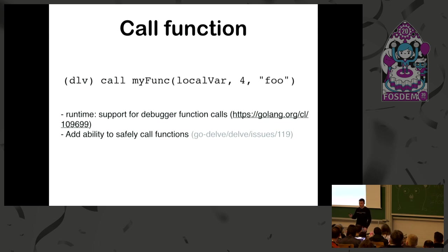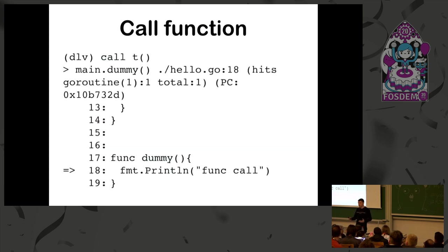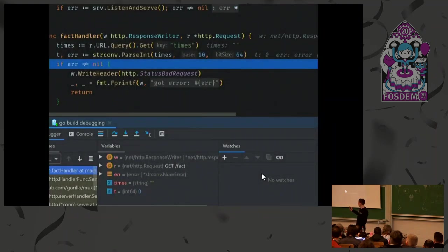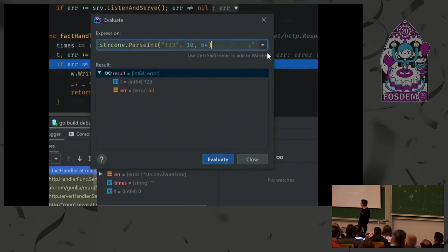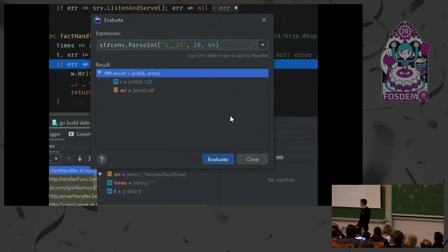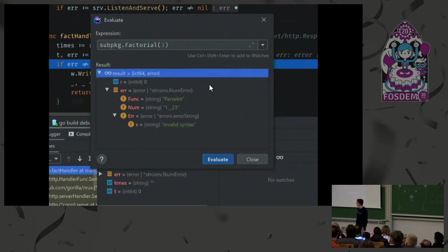You can call a function and debug it, but there are lots of limitations to this functionality - be careful. For instance, if you're in a Delve session, you can call your function and see the result. It's also supported in GoLand - we call it 'evaluate'. It's just calling a function and you can see the results. If you prefer visual debuggers like GoLand or VS Code, it will use absolutely the same feature.